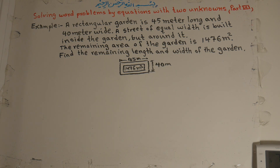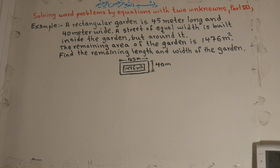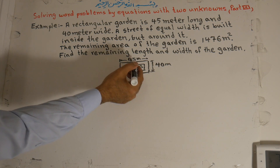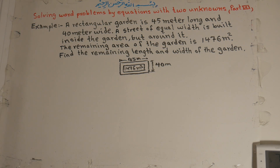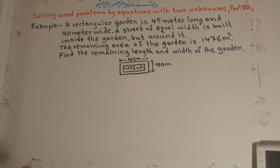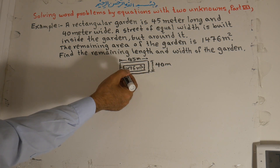Example. A rectangular garden is 45 meters long and 40 meters wide. A street of equal width is built inside the garden but around it. The remaining area of the garden is 1476 square meters. Find the remaining length and width of the garden — that is, find the length and width of this remaining part.